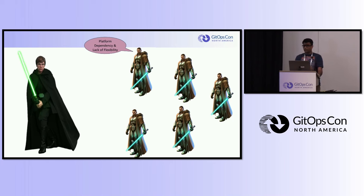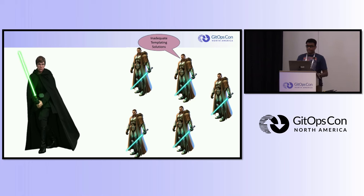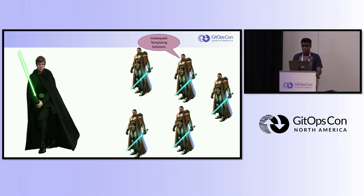First is support for existing tooling, which is often platform dependent and tied to a specific vendor. This lack of platform independence limits flexibility and hinders the ability to manage ACLs consistently across different environments. You can use templating languages like Jinja to generate configurations, but while templates help with code reuse and parameterization, they don't guarantee correctness of generated ACL rules. Templating solutions are also often platform dependent, requiring separate templates for different platforms, vendors, or even different versions of the same platform.